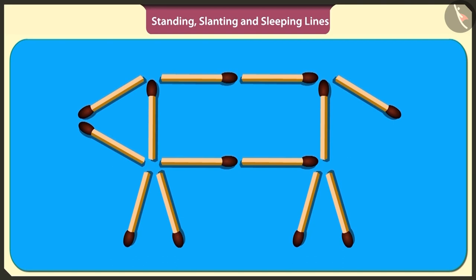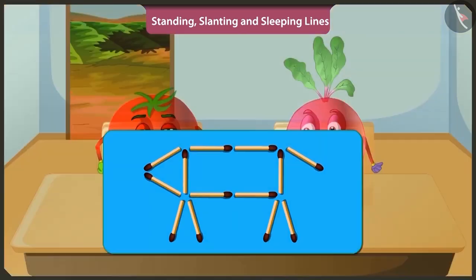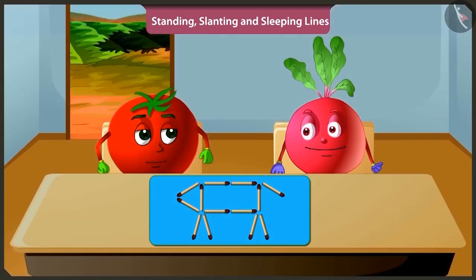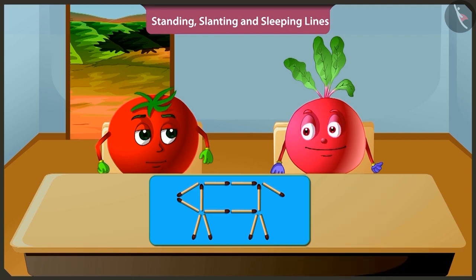Hey, to make the legs of the dog, the matchsticks are not standing but slanting. Hmm, I didn't understand. Pittu, even if the line is slightly oblique, it is called slanting. Yes, understood.